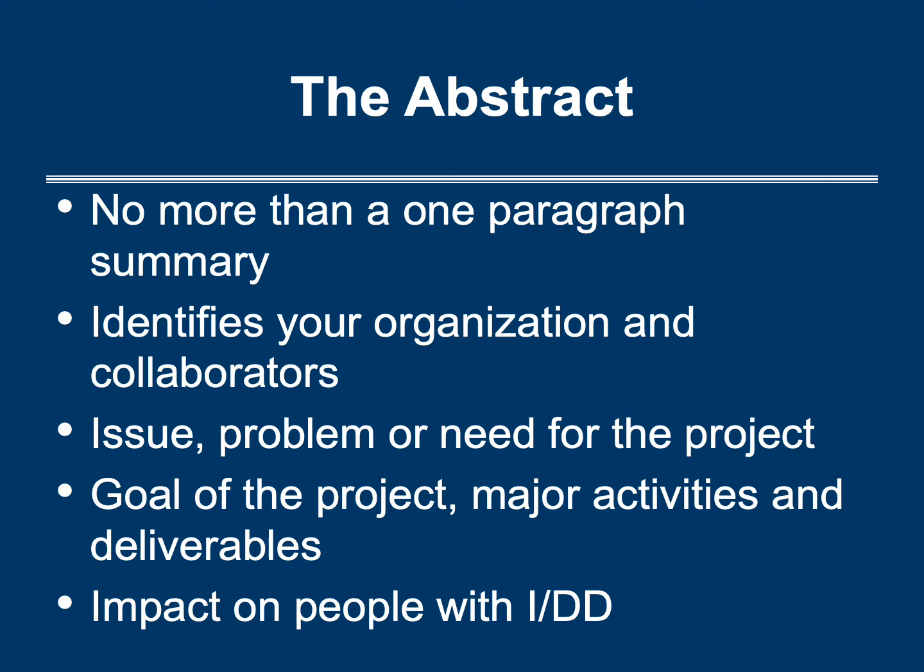Your abstract should identify your organization and important collaborators, as well as summarize the issue, problem, or need for your project. It should also include the goal of your project, major activities and deliverables, and the impact your project will have on people with intellectual and developmental disabilities. The abstract should only include information that is in the proposal — do not include any new information. Although the abstract is the first item read by reviewers, it should be the last section you write because it is essentially a project summary.